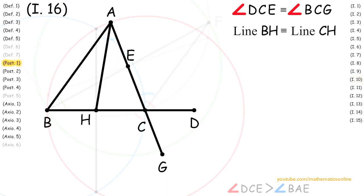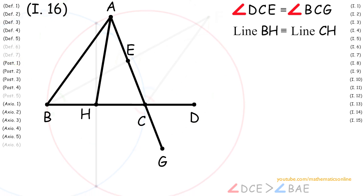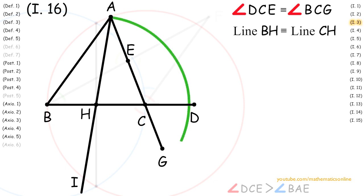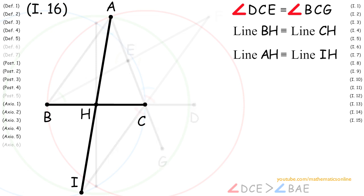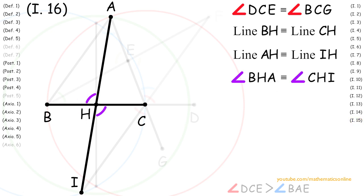With Postulate 1 we create line AH and we extend line AH to an arbitrary point I. With lines AI and AH we apply Proposition 3. Therefore line AH is congruent to line IH. Next we create line IC with Postulate 1. Looking at the intersecting straight lines BC and AI, we can see that by Proposition 15 the vertical angles BHA and CHI are congruent.